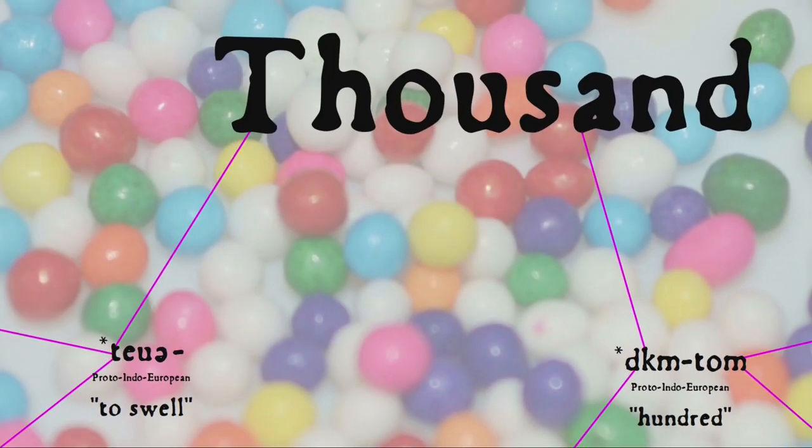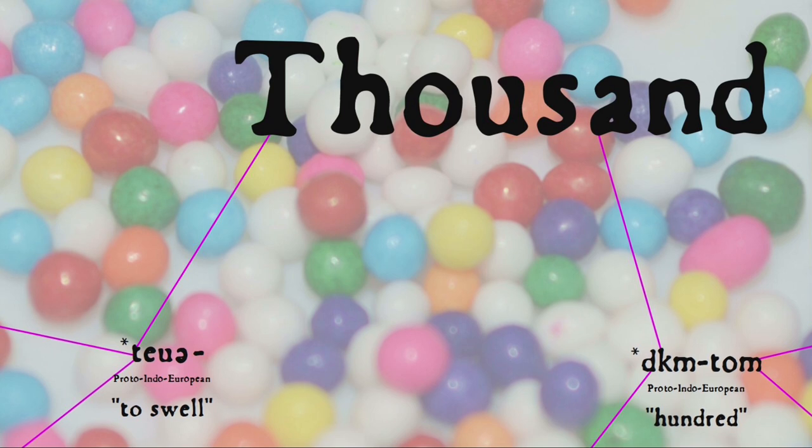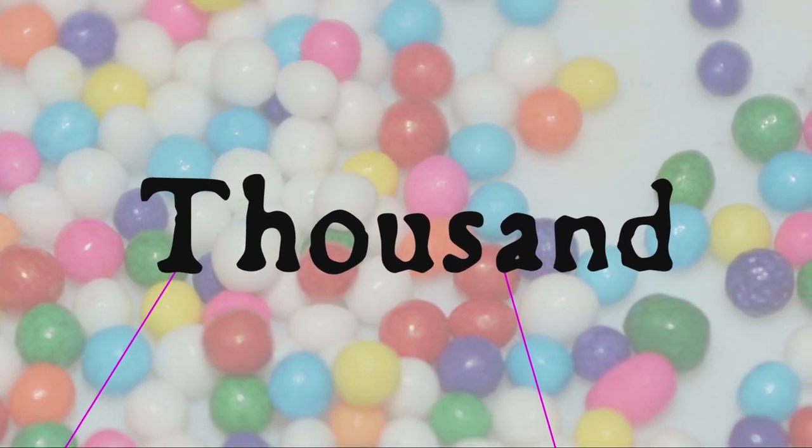But getting back to thousand, the first part of that word comes from a Proto-Indo-European root that means to swell, so literally thousand means 'swollen hundred.' It probably originally didn't refer to a precise number, meaning something more like 'a great many,' but eventually came to mean ten hundreds.